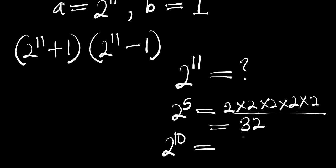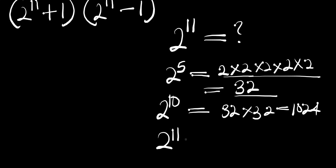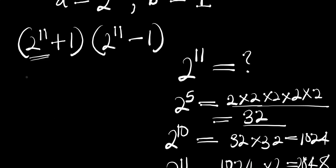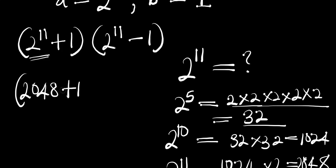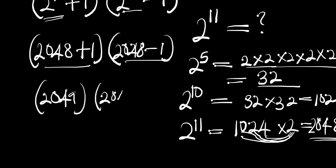Then 2 to the power of 10 equals 32 times 32, which is 1024. Then 2 to the power of 11 equals 1024 times 2. Multiplying out: 2×4=8, 2×2=4, 2×0=0, 2×1=2, giving 2048. So 2 to the power of 11 is 2048, meaning we have 2049 and 2047.